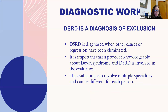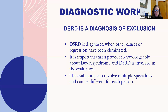The diagnostic workup is extensive because DSRD is a diagnosis of exclusion — meaning you've tried to rule out anything else that could be causing those symptoms, especially things that are fixable. It's important that a provider knowledgeable about Down syndrome and DSRD is involved in the evaluation. This evaluation can involve many different specialties and can be different for each person — often including a developmental pediatrician, neurologist, immunologist, psychologist, psychiatrist, and sometimes a rheumatologist.